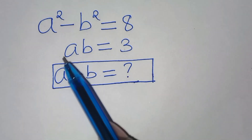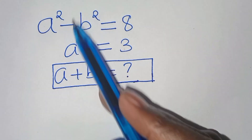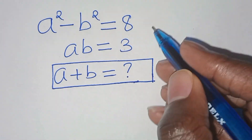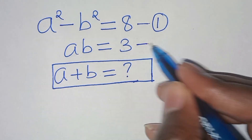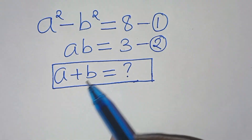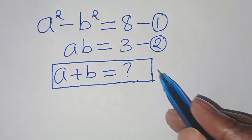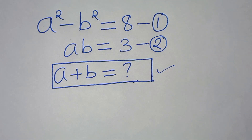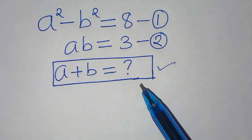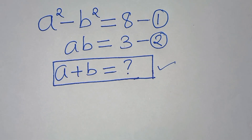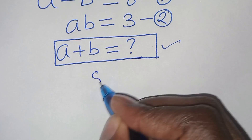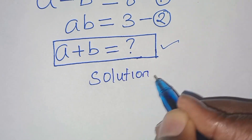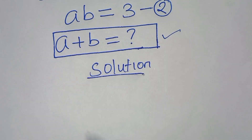Welcome to this algebra problem. We have a squared minus b squared equals 8 — let's call this equation 1 — and a times b equals 3 — let's call this equation 2. What is the value of a plus b? If it's your first time on this channel, please like and subscribe. If you have a different technique, don't hesitate to share in the comment section.